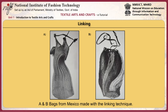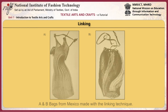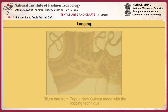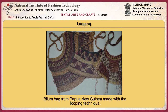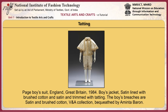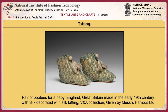These are bags from Mexico made with the linking technique. This is a billum bag from Papua New Guinea made by the looping technique. Another example of the looping technique from Papua New Guinea used to make a billum bag. This is a knotted fringe from Mexico. This page boy suit from Great Britain shows a boy's jacket satin lined with brushed cotton and satin, and trimmed with tatting. The boy's breeches are satin and brushed cotton. This pair of booties for a baby in England was made in the early 19th century in silk, decorated with silk tatting.